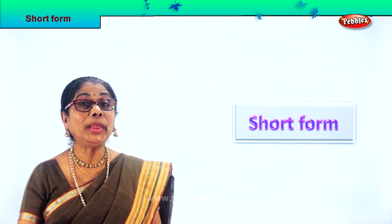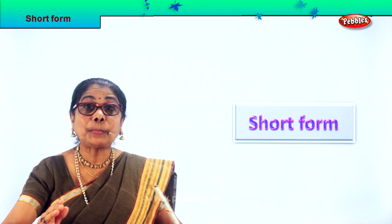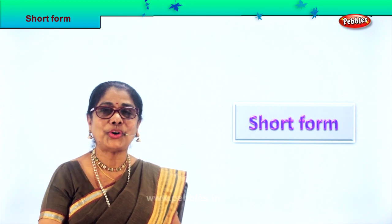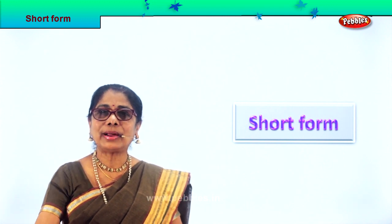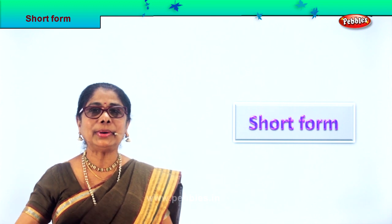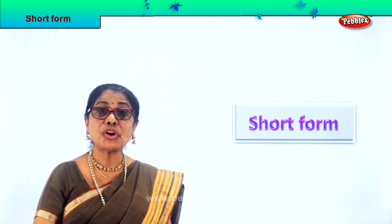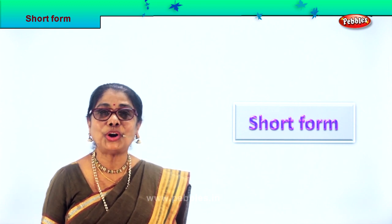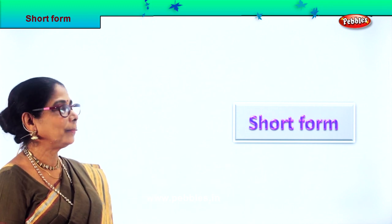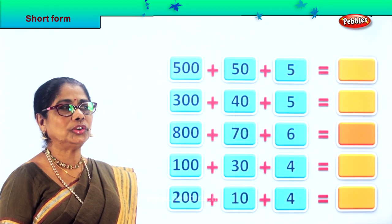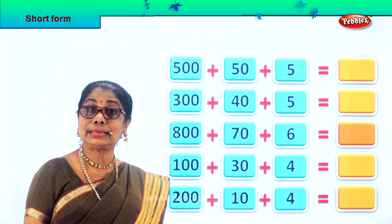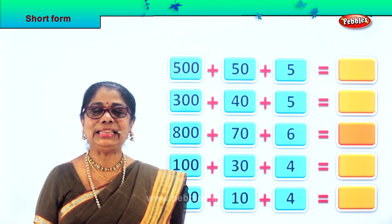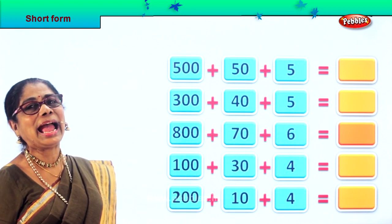Hi children, we learned the expanded form. Now we learn in this exercise the short form. Instead of writing 300 plus 10 plus 0, we shorten. How to shorten the number? We are learning in this exercise the short form of numbers. I hope you'll enjoy this nice little exercise. If you know how to do expanded, this is very easy. Let's understand how to do it.